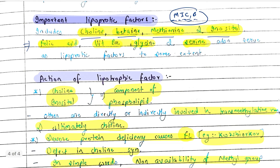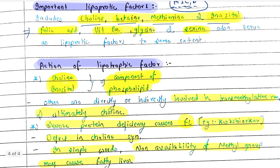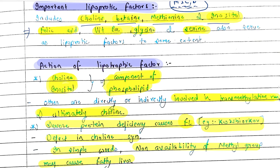Now let us talk about the action of Lipotropic Factors. Choline and Inositol are components of phospholipids. Others are directly or indirectly involved in transmethylation, and ultimately in the synthesis of choline.